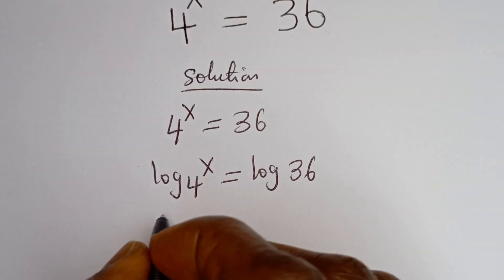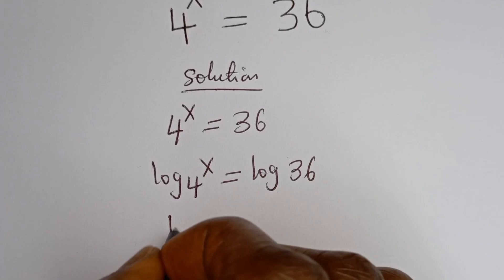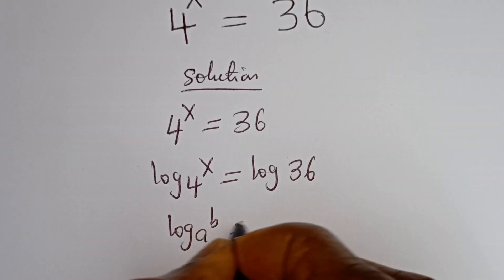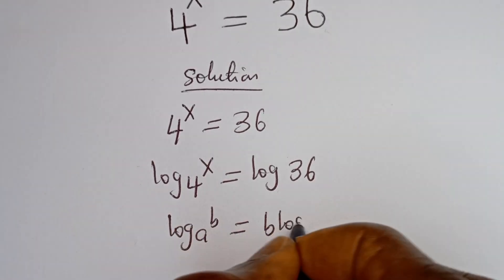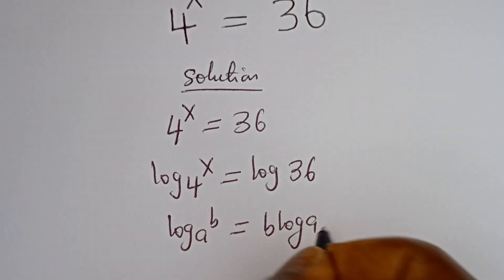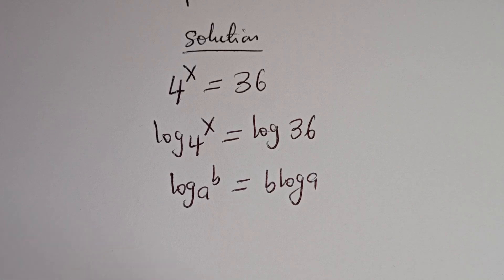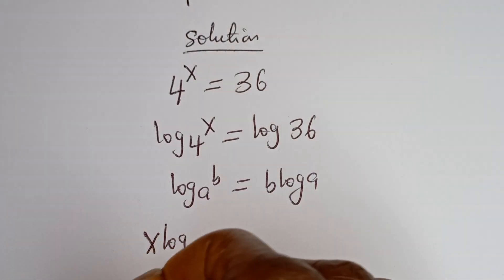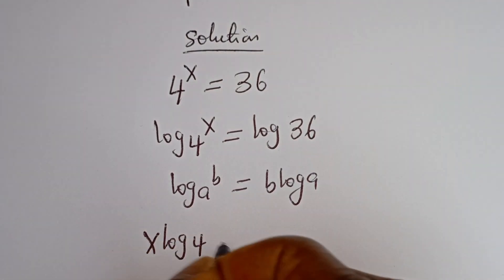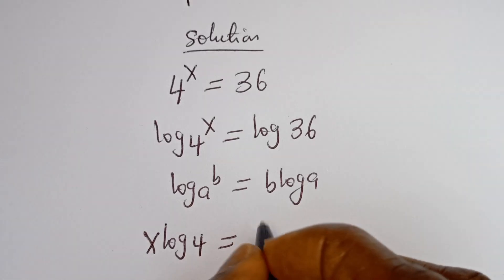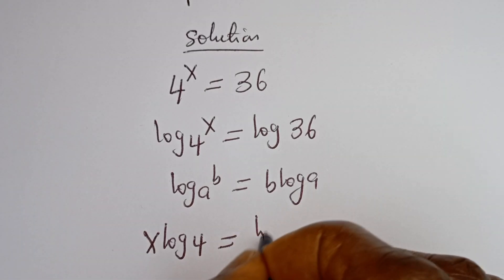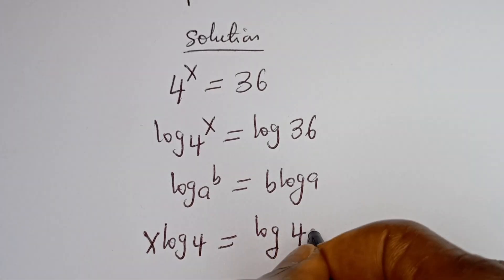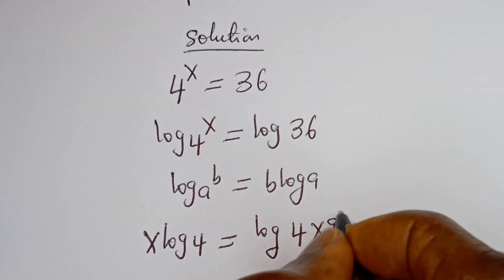Then, if you have log a to the power of b, this is equal to b log a. So we have x log 4 is equal to log 36. And log 36 can be written as log 4 multiplied by 9.